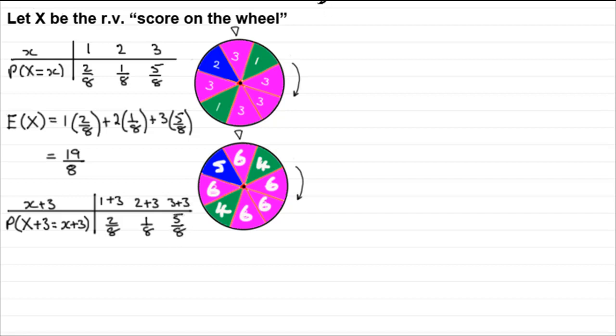Now, in the usual way, we can work out what E of X plus 3 is going to be. Because remember, when you want to work out an expected value, all you've got to do is multiply the observed value with the probabilities and then total them, sum them up. So we would have 1 plus 3 multiplied by 2 eighths, we'd add that to 2 plus 3 times 1 eighth, and finally the 3 plus 3 is going to be multiplied by the 5 eighths.